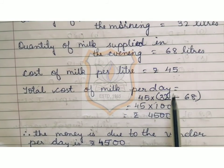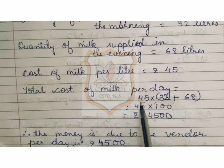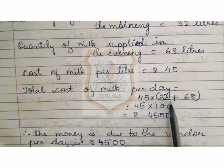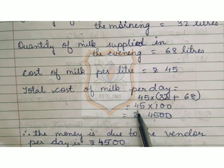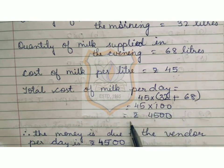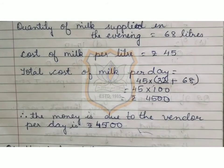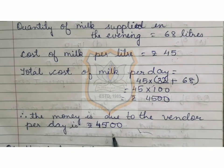So now we have to find out the total cost of milk per day. Here also, according to the previous question, we write the common number in the front: 45 multiplied by 32 plus 68. By adding these two numbers we get 100. Now we multiply 45 by 100, and we get Rs. 4,500. Therefore, the amount due to the vendor per day is Rs. 4,500.